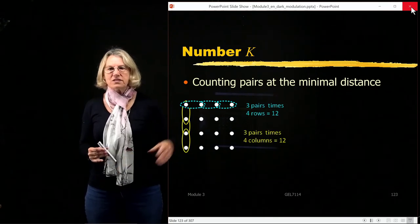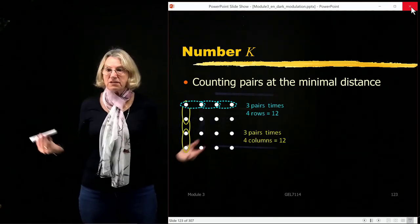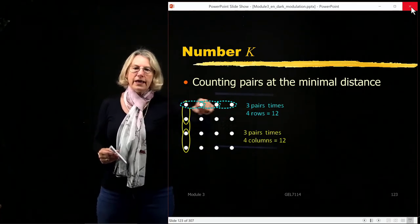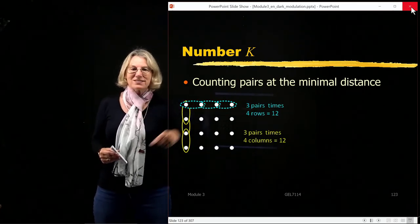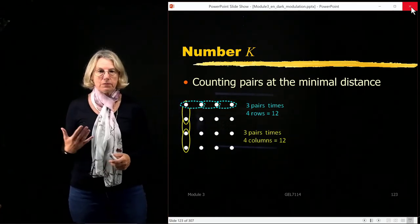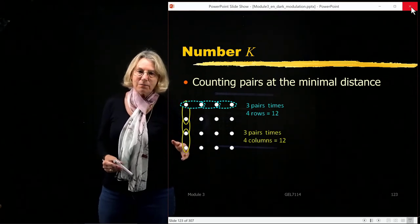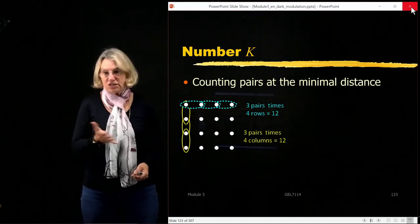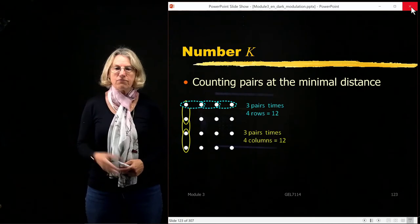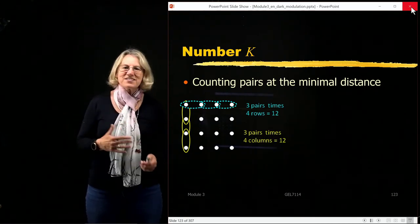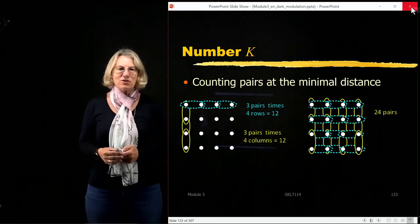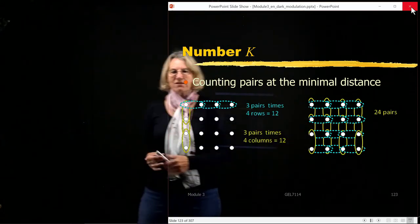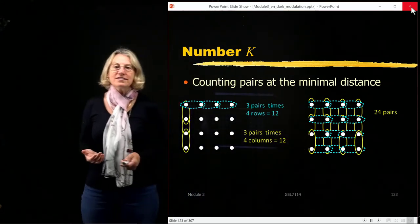For square QAM there's a lot of symmetry, which makes the calculation easy. Looking at any single row, there are 3 pairs at the minimum distance; similarly 3 pairs in each column. With 4 columns and 4 rows, the total number of pairs at the minimal distance is 24.